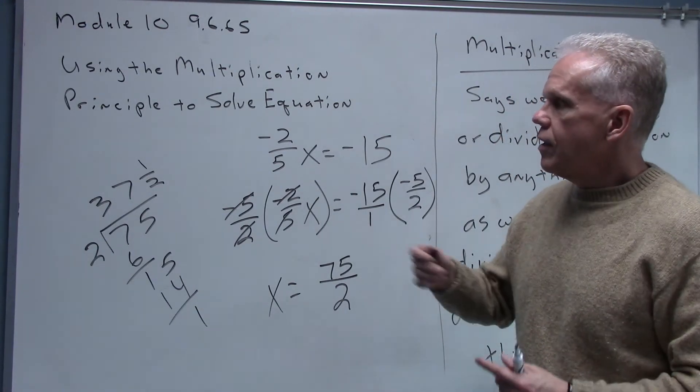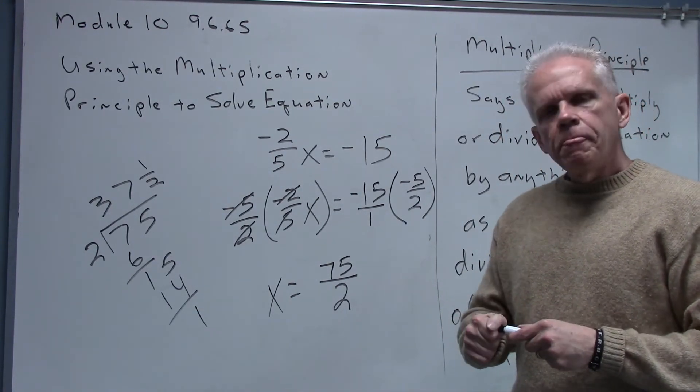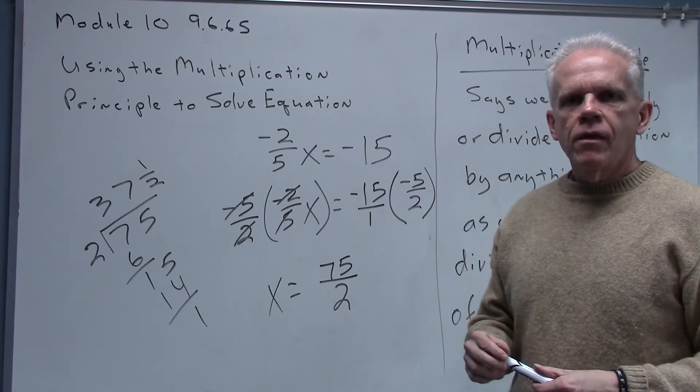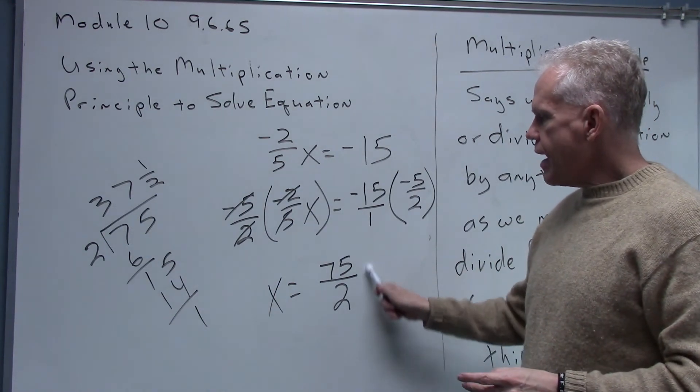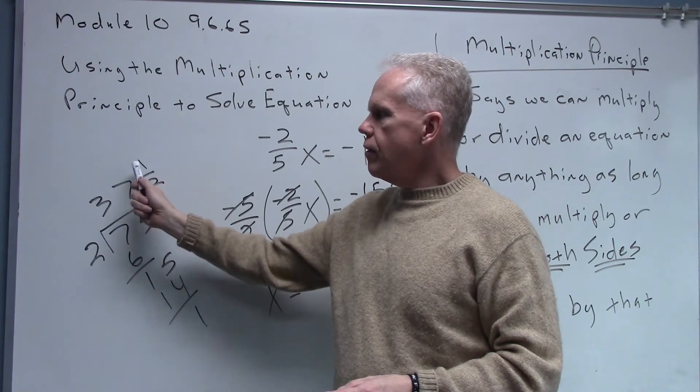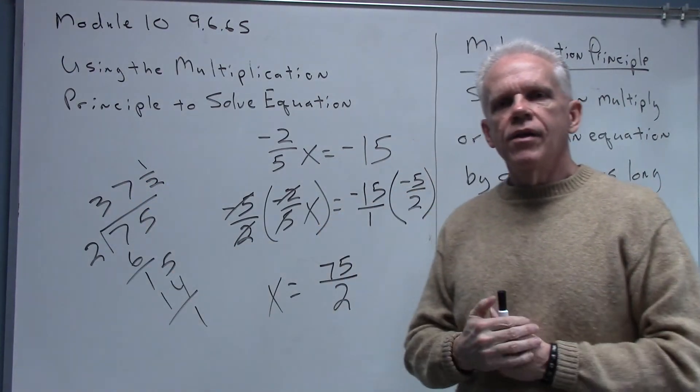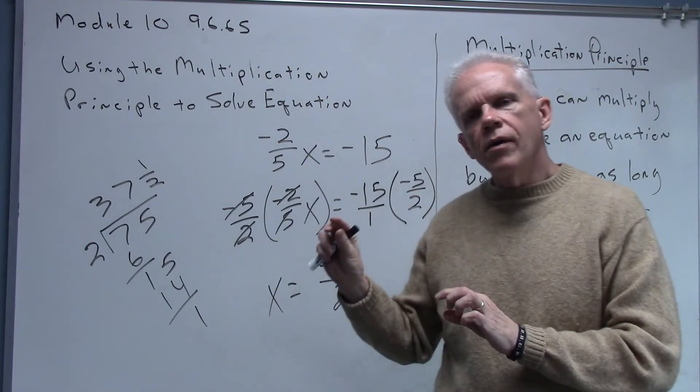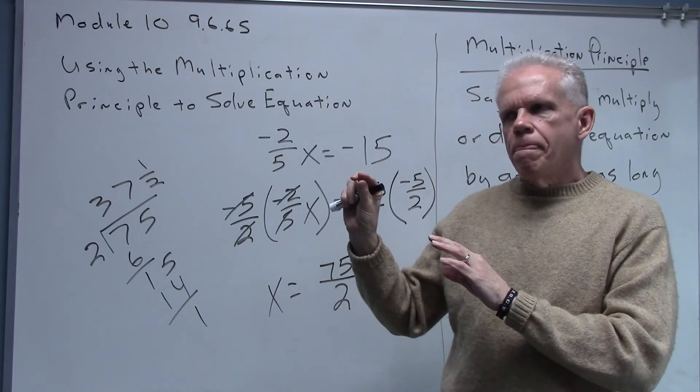It really comes down to identifying how they want the answer. They may ask for just a simplified fraction here, they may ask for a mixed number simplified here, or they may say give your answer as a decimal number. In critical thinking you always want to identify the question and how whoever's asking the question wants the answer to be expressed.